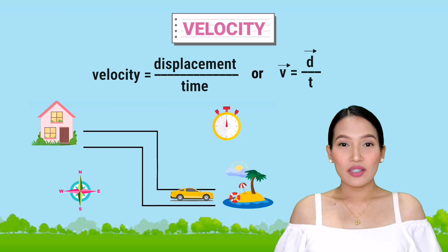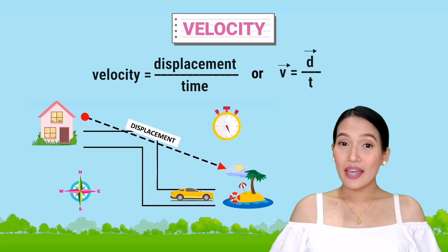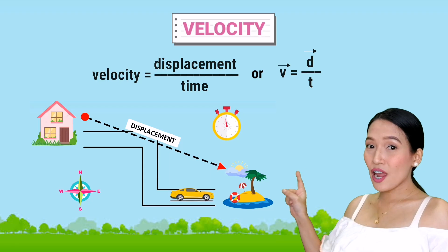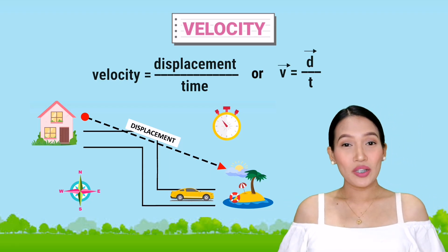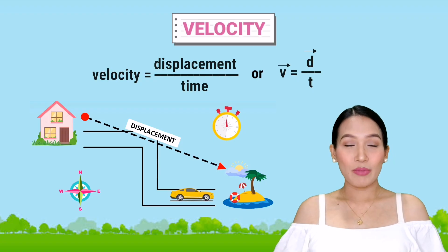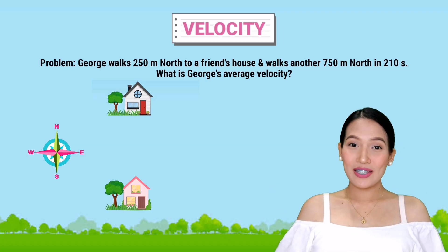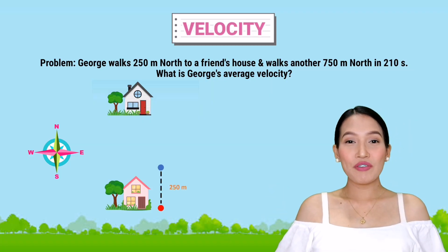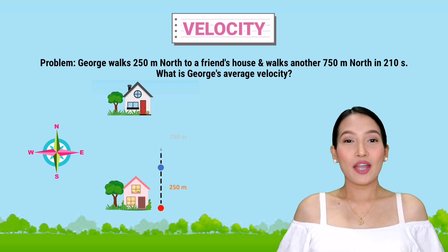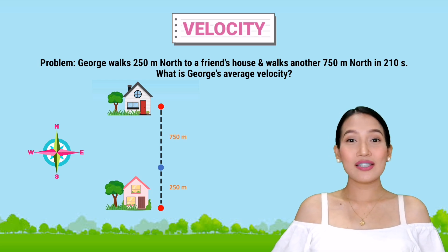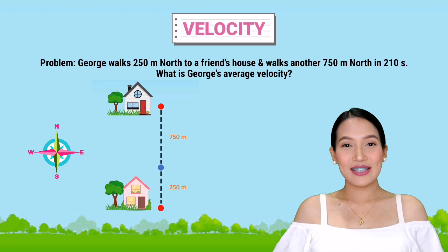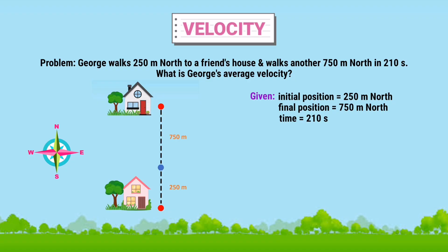Since velocity has direction, it uses displacement instead of distance. Notice that there is an arrow above the symbols — it only means both velocity and displacement are vector quantities. Let's take a look at this example to solve for velocity. George walks 250 meters north to a friend's house and walks another 750 meters in 200 seconds. What is George's average velocity? The given values are: initial position is 250 meters north, final position is 750 meters north, and the time is 210 seconds.